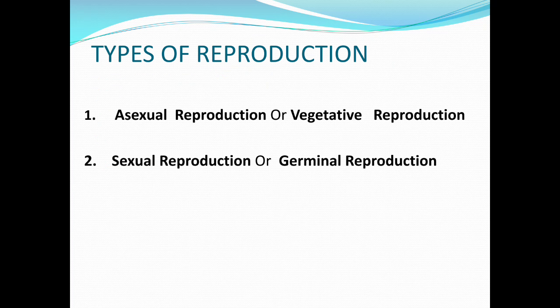Now let us see what are the different types of reproduction. Reproduction is broadly classified into two types. Number one is asexual reproduction, which is also known as vegetative reproduction. Asexual reproduction takes place in plants and lower invertebrates. In this process, different types of vegetative parts — for example, stem, roots, and leaves — take part in reproduction.